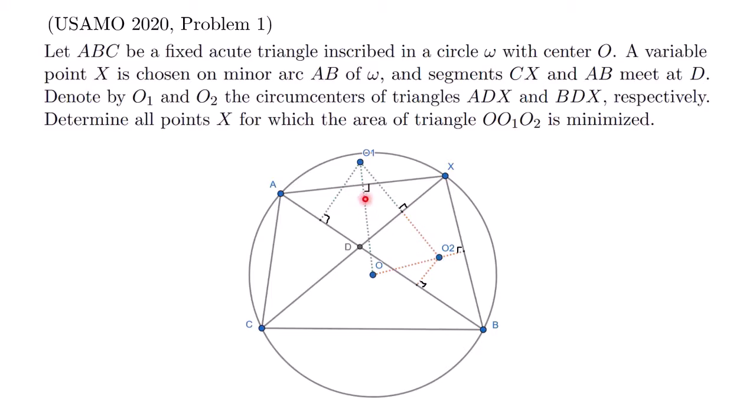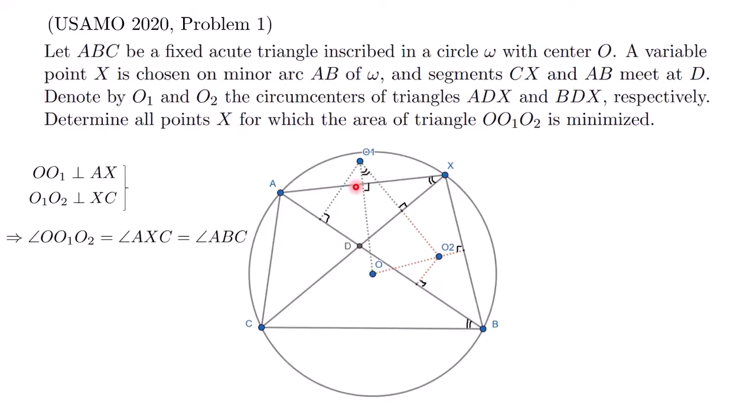And actually over here, we can quickly notice that due to the right angles, we have four points which are concyclic. The conclusion is that this angle and this angle are actually equal. Now another way to see this is to notice that OO1 perpendicular to AX and OO2 perpendicular to CX implies that this angle is actually a 90 degree rotation of the second angle.